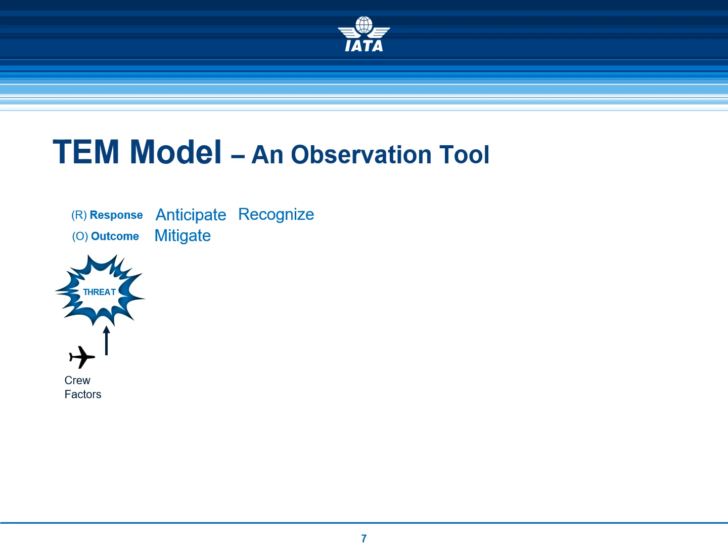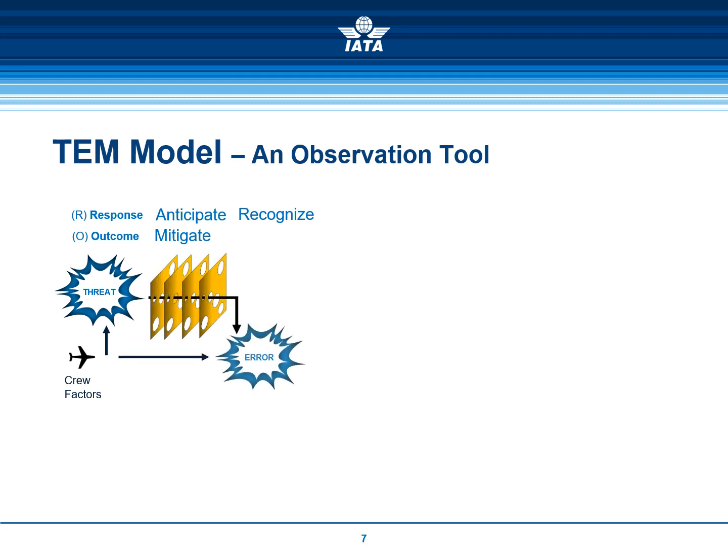For example, during the departure briefing, the pilots anticipate or recognize stormy activities in the area of the airport, they assess the impact of the weather on the take-off performance, and they review the wind shear procedure. However, another response could be partial or no anticipation or recognition, and the outcome could be improper or no strategy, which may lead to an error.